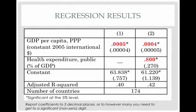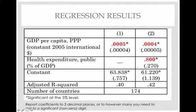Looking at the table with numbers highlighted in red — the coefficients — you should report coefficients to three decimal places, or to however many you need to get a significant nonzero digit. Some coefficients required going out further than three decimals to reach a nonzero number. You don't want to show zeros with no information; go out until you have a nonzero digit, but otherwise three decimal places is the standard.